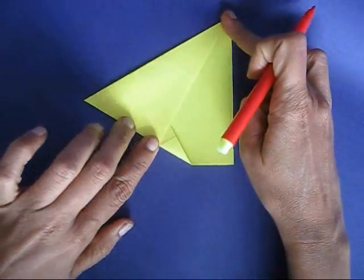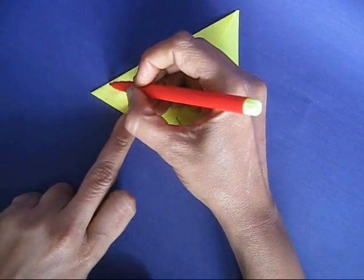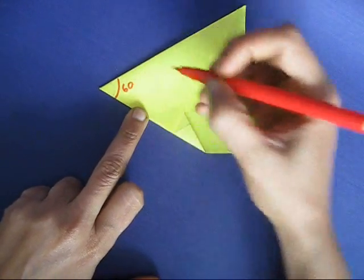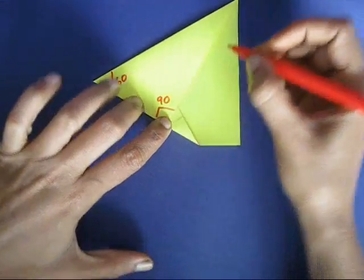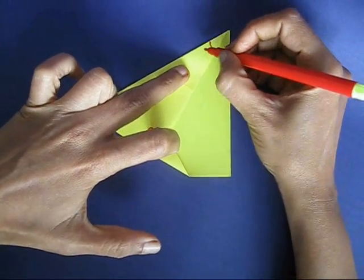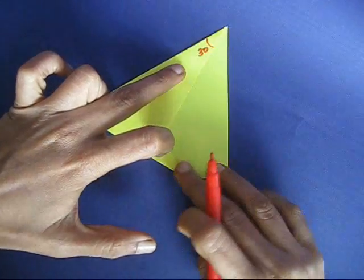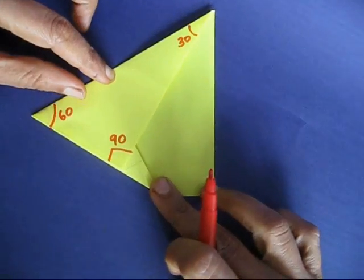Now you have this triangle where of course this corner is 60 degrees, and because one corner is the corner of the square which is 90 degrees, the last third angle will be 30 degrees because the sum of the angles of the triangle will be 180 degrees.